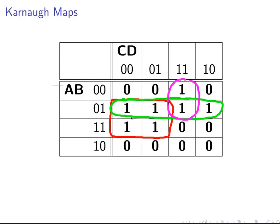So this red area here — how can we describe this? Two things they have in common: look at the AB settings. B is positive here and B is positive here. C is negative — not C — with reference to both of the columns. So we can actually express the red region simply as B, not C.